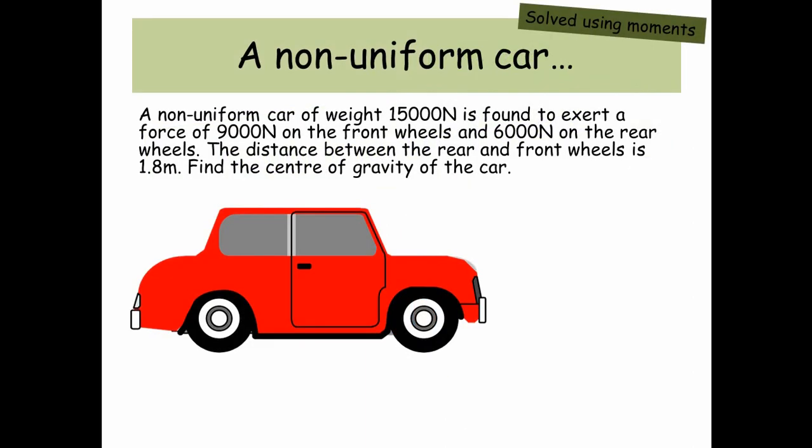So starting off, a non-uniform car. A non-uniform car of weight 15,000 newtons is found to exert a force of 9,000 newtons on the front wheels and 6,000 newtons on the rear wheels. The distance between the rear and front wheels is 1.8 meters, find the center of gravity of the car.